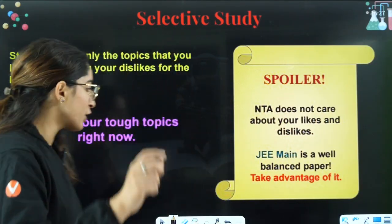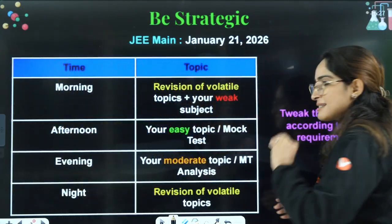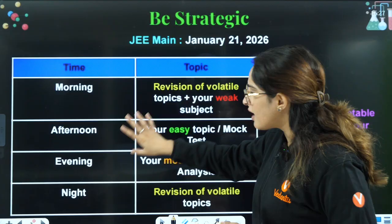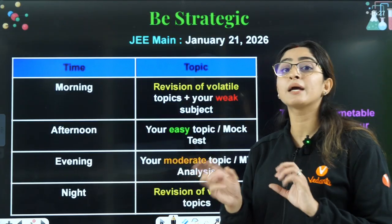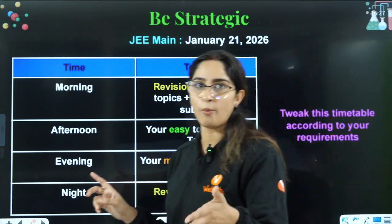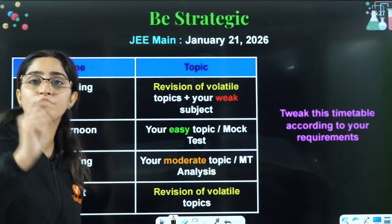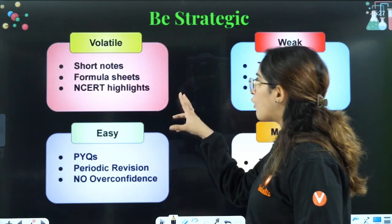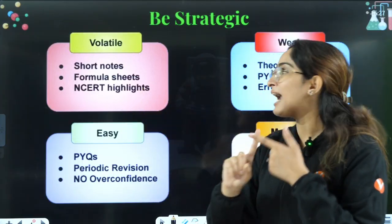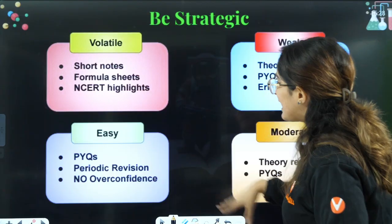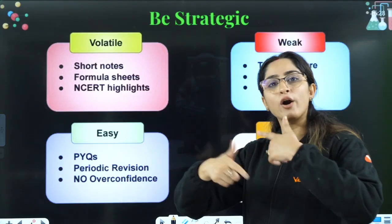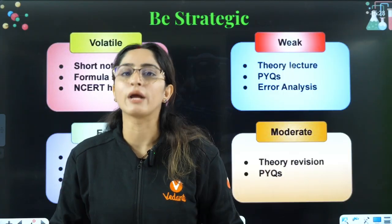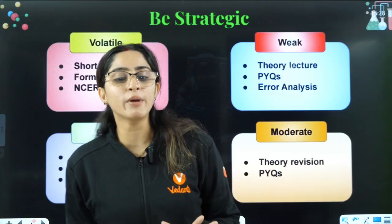You need to see your strengths and weaknesses. Here's a simple daily timetable: in the morning, pick your toughest topic; in the afternoon, pick an easy topic; in the evening, pick a moderate topic; and at night, revise volatile topics. Before waking up and before sleeping, revise topics you tend to forget. For volatile topics, maintain short notes, formula sheets, and NCERT highlights. For easy topics, do previous year questions and periodic revision every seven to eight days.